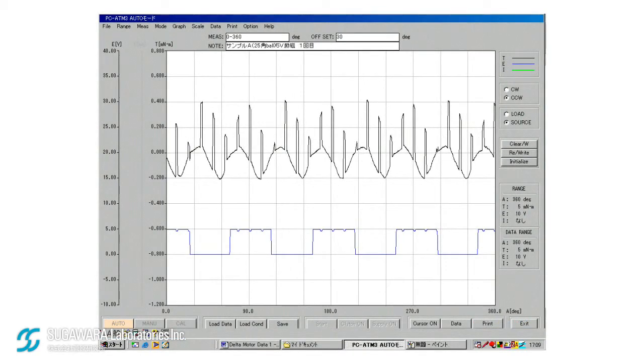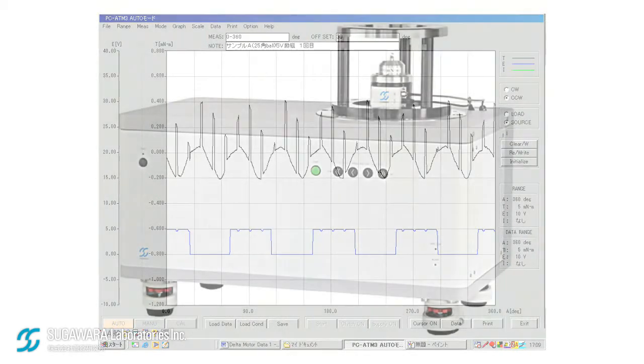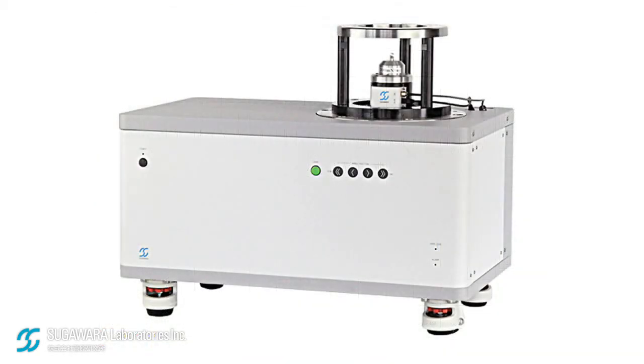One controller with two different models of sensors allow for both cogging torque and torque ripple testing. The ATV models are available for testing torque over 100mNm to 10Nm. Their test speed is adjustable from 1RPM to 10RPM for the convenience of torque ripple testing.